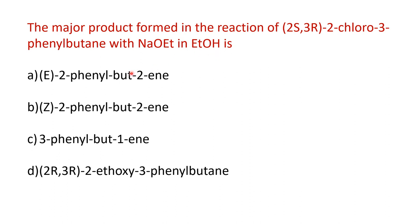Finally, the products formed also have some configuration. If they are alkenes, we must assign them as E or Z, or if it is a substitution product, we assign RS notation. In total, there are 3 things we will study: first, the configuration and stereochemistry; second, the kind of elimination reaction; and third, the stereochemistry of the molecule undergoing elimination.